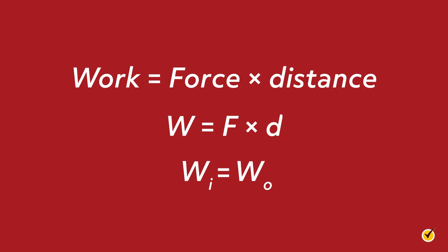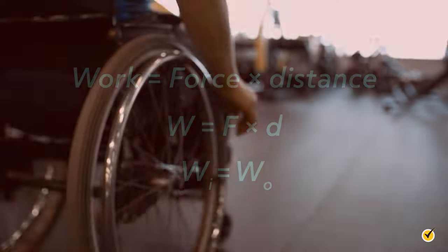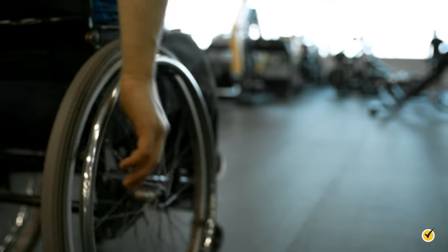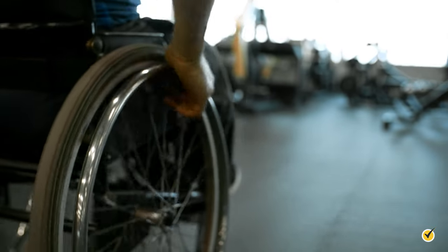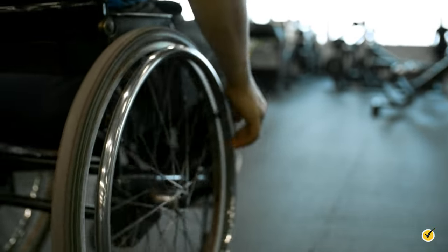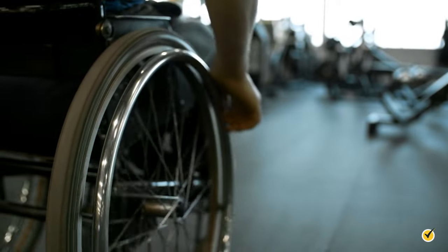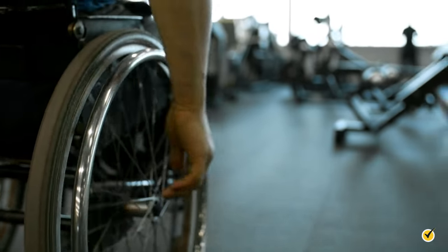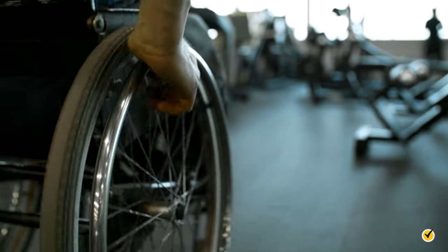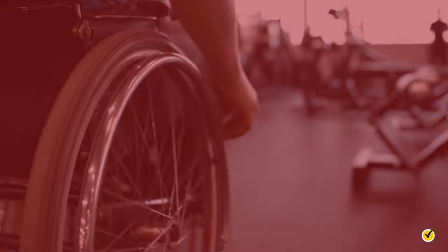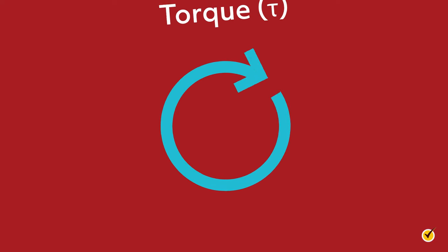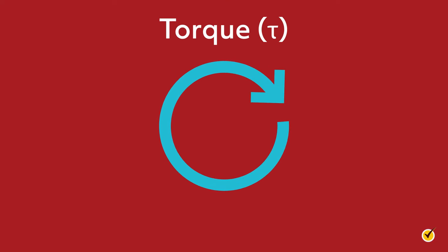Also recall that the input work must equal the output work due to the conservation of energy, so input work equals output work. But with the wheel and axle we can apply a small force to the wheel and get a bigger force out of the axle, as long as we apply the force over a longer distance. What's important to note here is that, since we're dealing with circular motion, we're going to use the concept of torque.